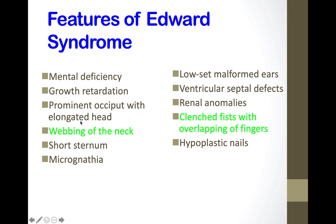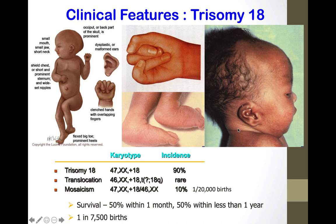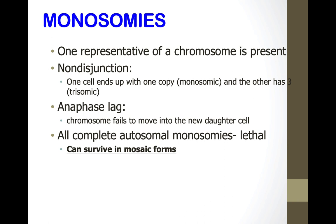Trisomy 18 is Edwards syndrome, occurring in about 1 in 7,500 births. Its features are very similar to trisomy 13.